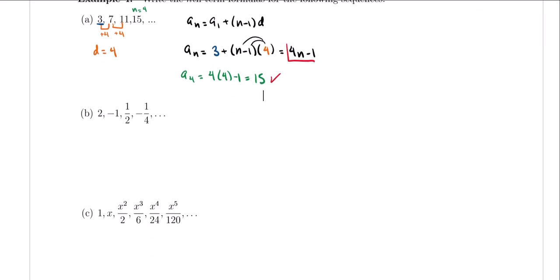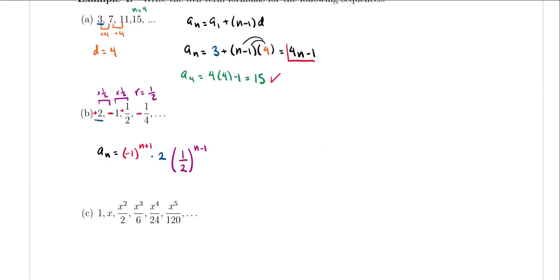For the next example, the terms are 2, negative 1, 1/2, and negative 1/4. You notice alternating signs, so we need negative 1 raised to some power. Looking at the magnitudes: 2, 1, 1/2, 1/4 — to go from one term to the next you're multiplying by 1/2. That's our common ratio, so we're dealing with a geometric sequence. The formula is the first term times r raised to n minus 1.